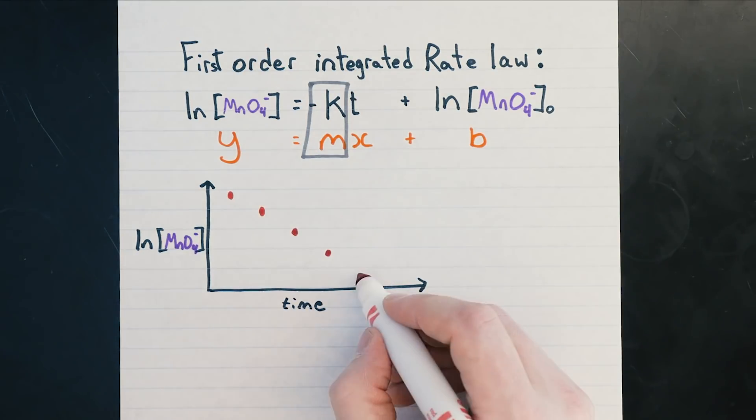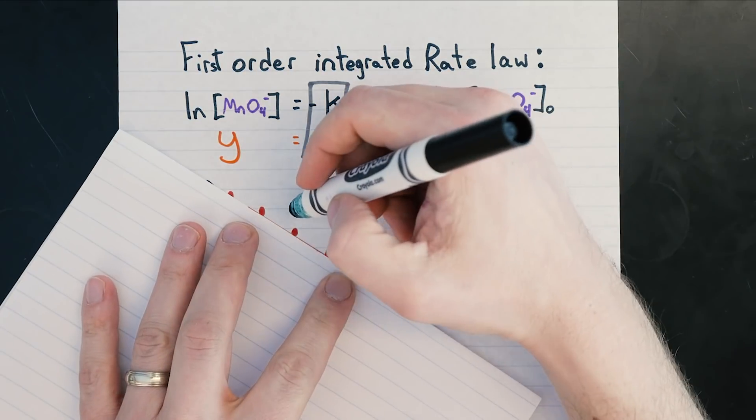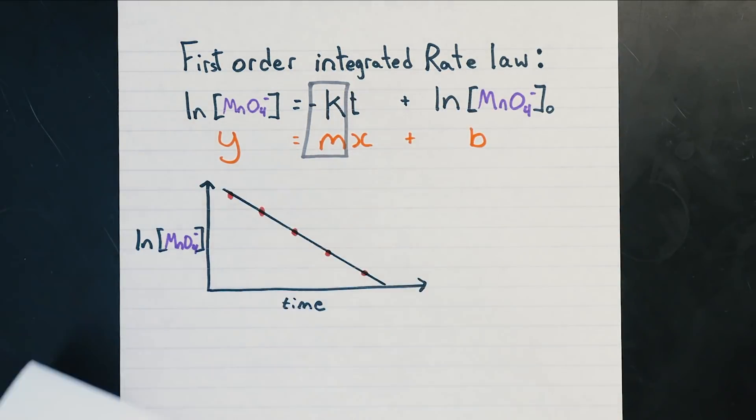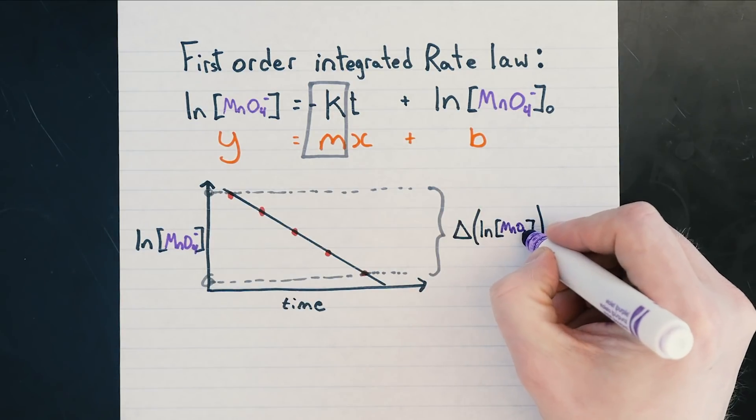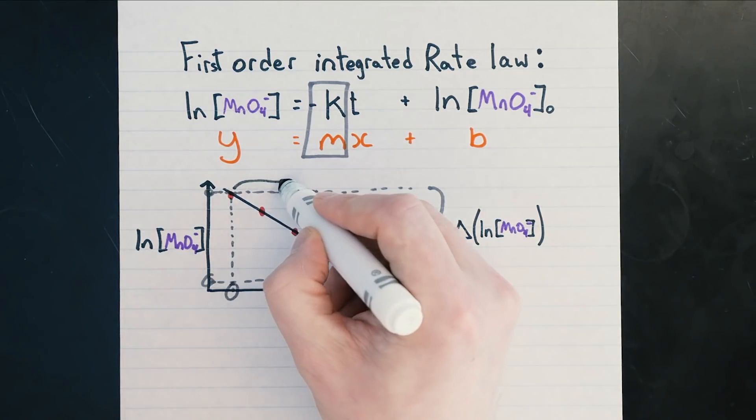Draw your best straight line through your data and measure the slope exactly like you did before: change in the vertical axis divided by change in the horizontal axis. The value of the slope will be equal to minus k, so we'll flip the sign.